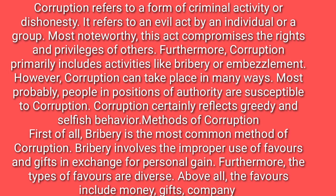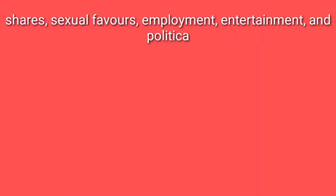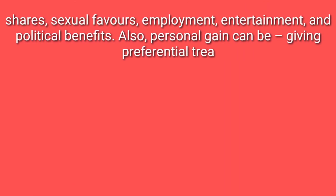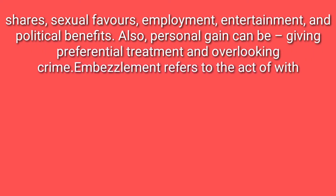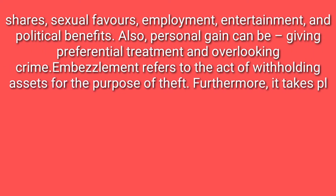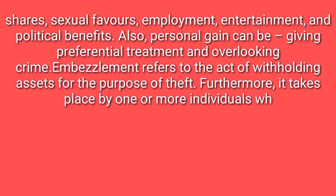Methods of Corruption. First of all, bribery is the most common method of corruption. Bribery involves the improper use of favors and gifts in exchange for personal gain. Furthermore, the types of favors are diverse. Above all, the favors include money, gifts, company shares, sexual favors, employment, entertainment, and political benefits. Also, personal gain can include receiving preferential professional treatment and overlooking crime.